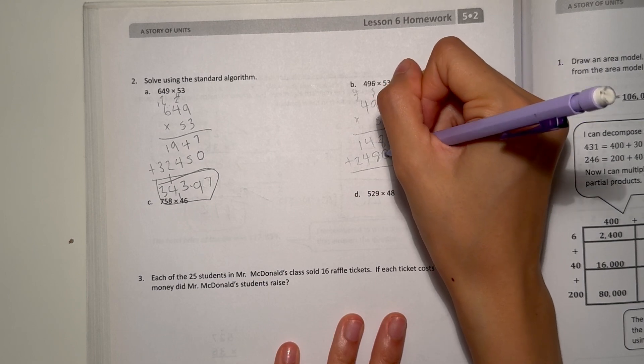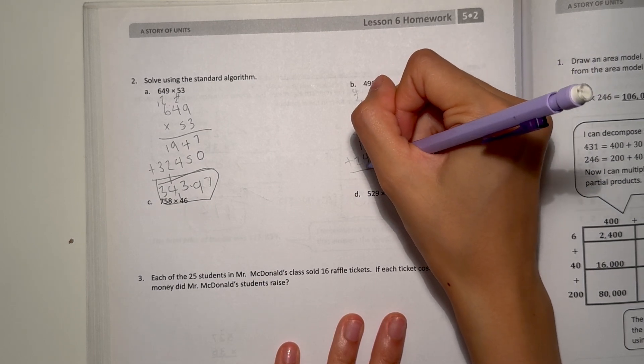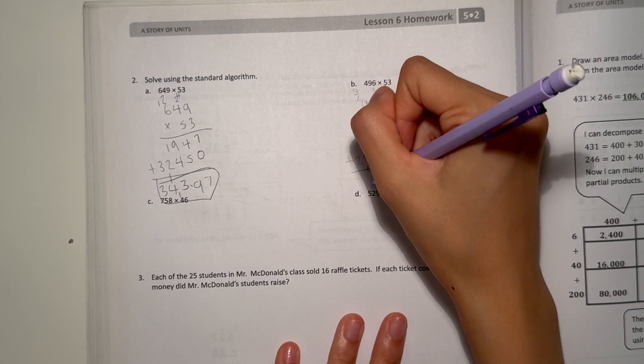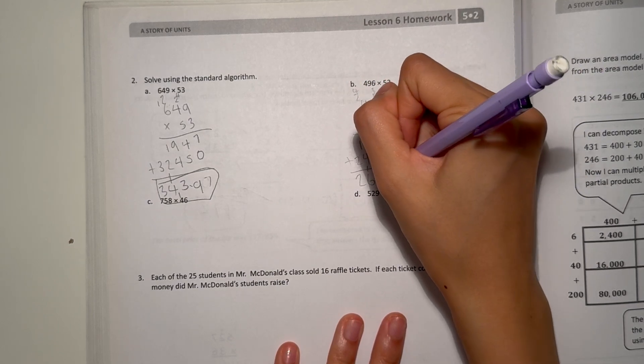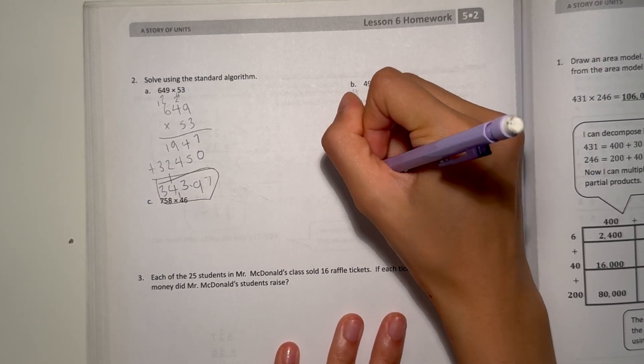Let's add. 8 plus 0 is 8. 8 plus 0 is also 8. 4 plus 8 is 12. 4, 5, 6. And then 2. So 26,288.